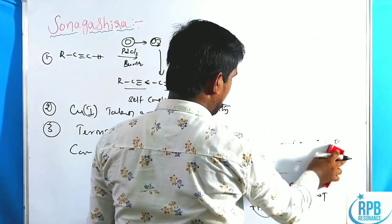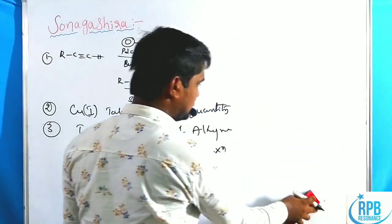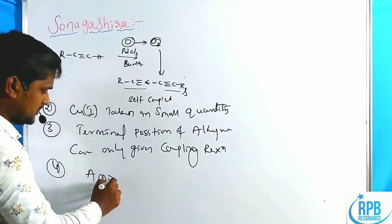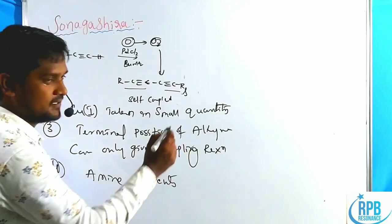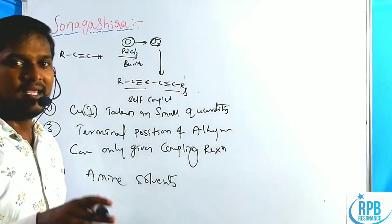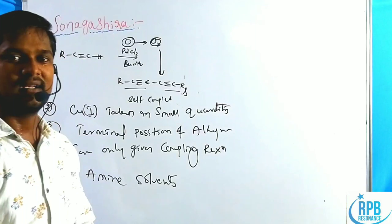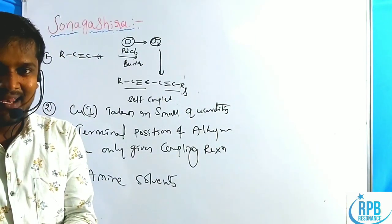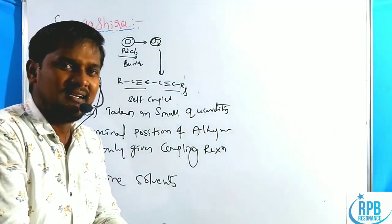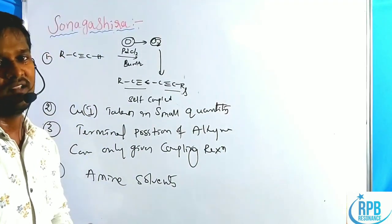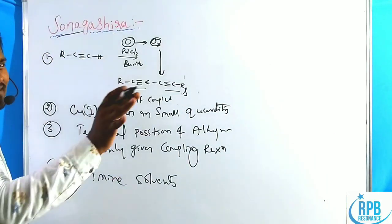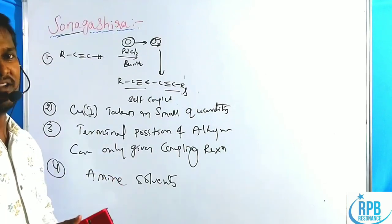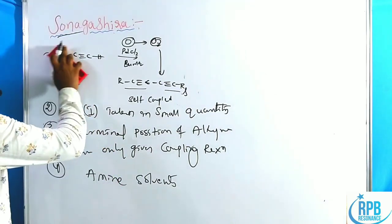Another important point: amine solvents such as butylamine are used in Sonogashira coupling. Simply put, it is a palladium-copper double-catalyzed new C-C single bond formation from terminal alkynes and organo halide or organo triflate compounds. That is what is called Sonogashira. Now let us discuss the mechanistic catalytic pathway of the Sonogashira cross-coupling reaction.